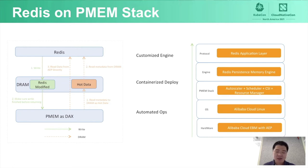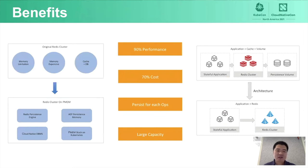On top of the hardware is Alibaba Cloud Linux OS. The middle layer is the cloud-native Kubernetes platform, providing extension plugins such as Auto-resizer, Scheduler plugins, and Resource Manager. On top of the system is the customized Redis engine and Redis applications. By running the business on the PMEM stack, the Redis service achieves containerized deployment and automatic operations. In the old Redis system, the limitation of memory capacity meant it couldn't meet the requirements of large-capacity cache systems, and the high cost of memory kept service costs high. The old system also used both cache and storage resources.